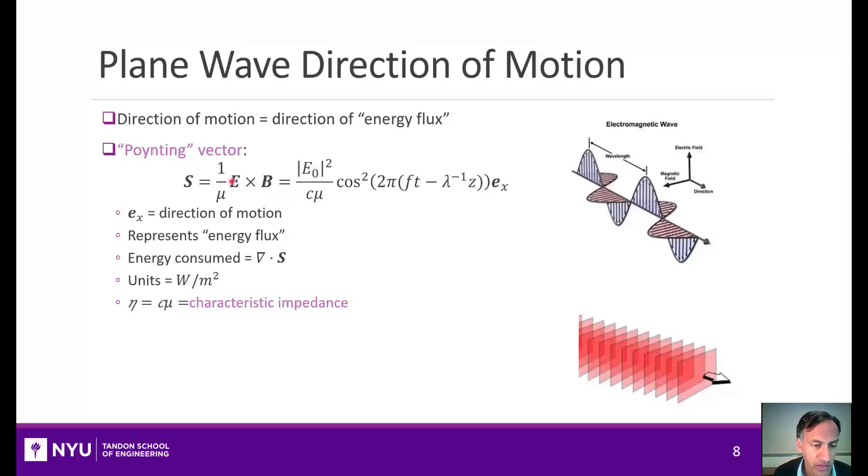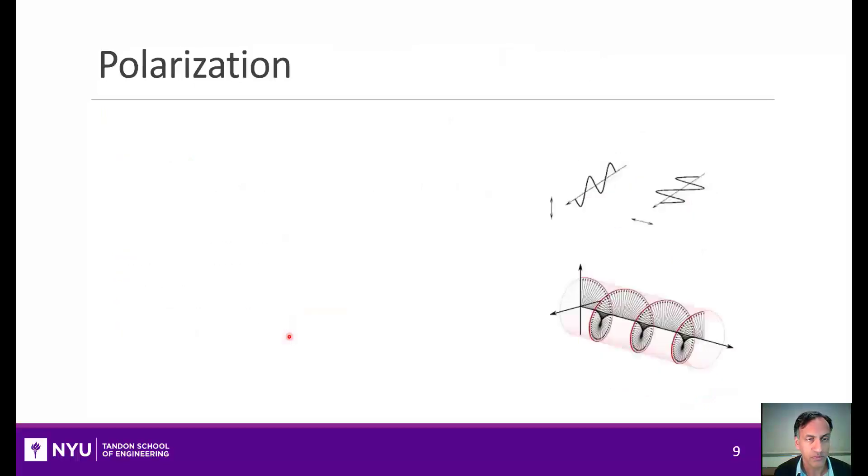You'll see here that there is this C times U, the constant term, and this is called the characteristic impedance, and in a vacuum, that characteristic impedance is 377 ohms. It's a fixed constant number.